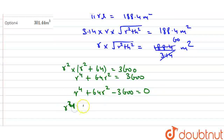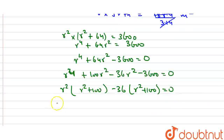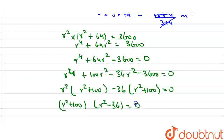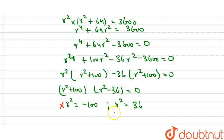Rearranging: r to the power 4 plus 64 r squared minus 3600 equals zero. Factoring: r squared times the quantity r squared plus 100, minus 36 times the quantity r squared plus 100, equals zero. So r squared equals minus 100 (rejected, as r squared cannot be negative) or r squared equals 36, giving r equals 6 meters.